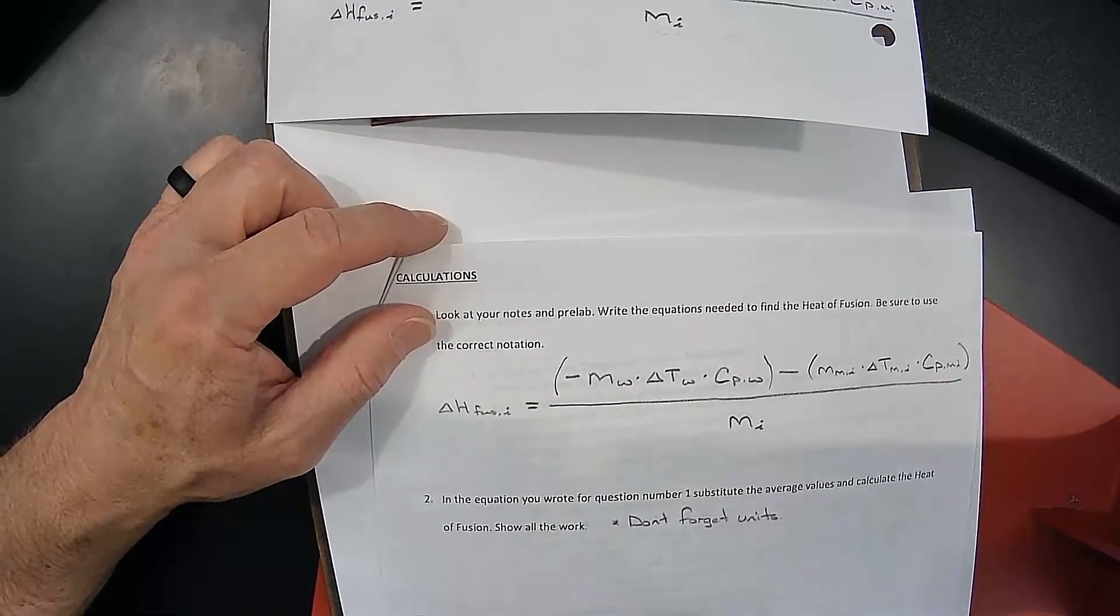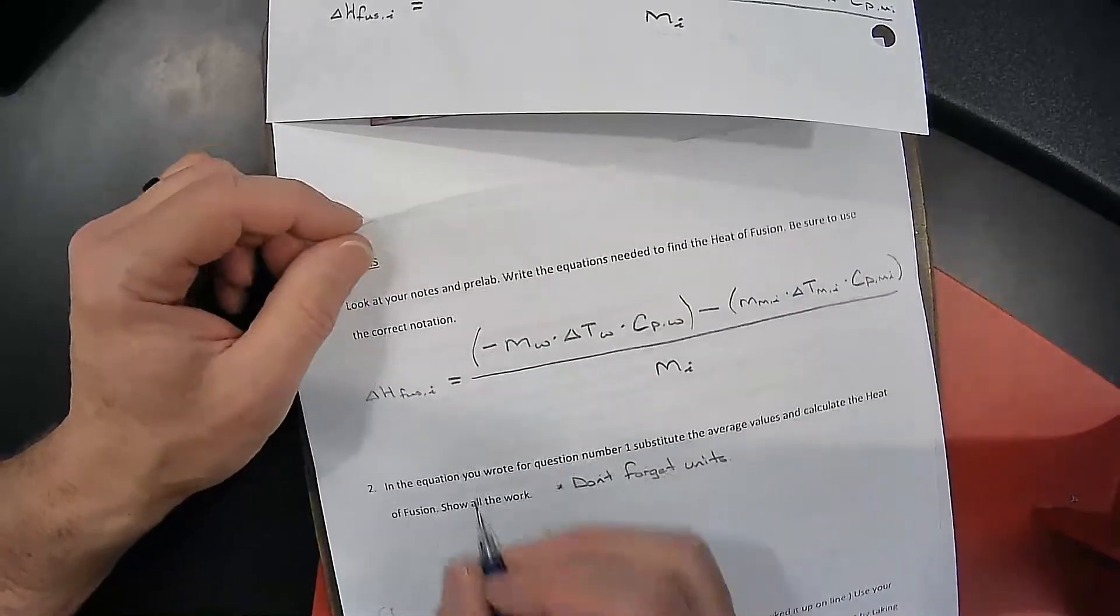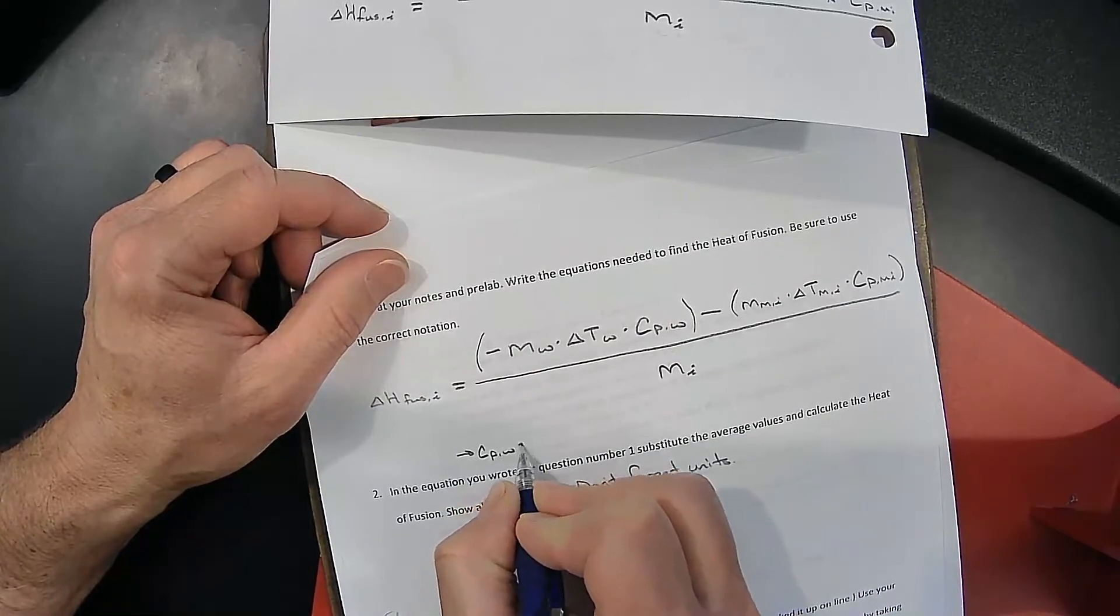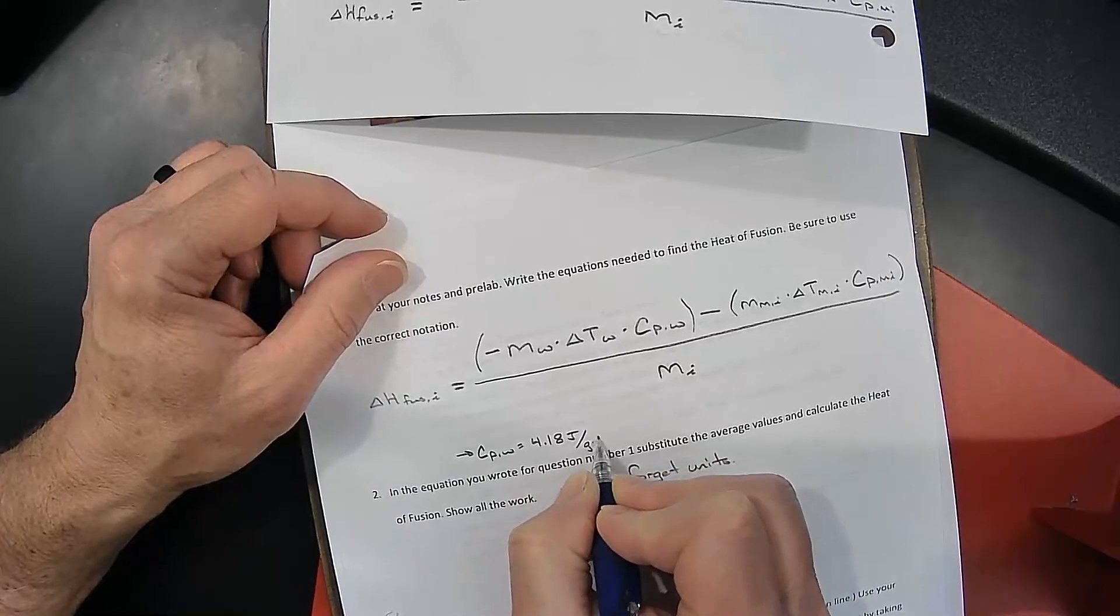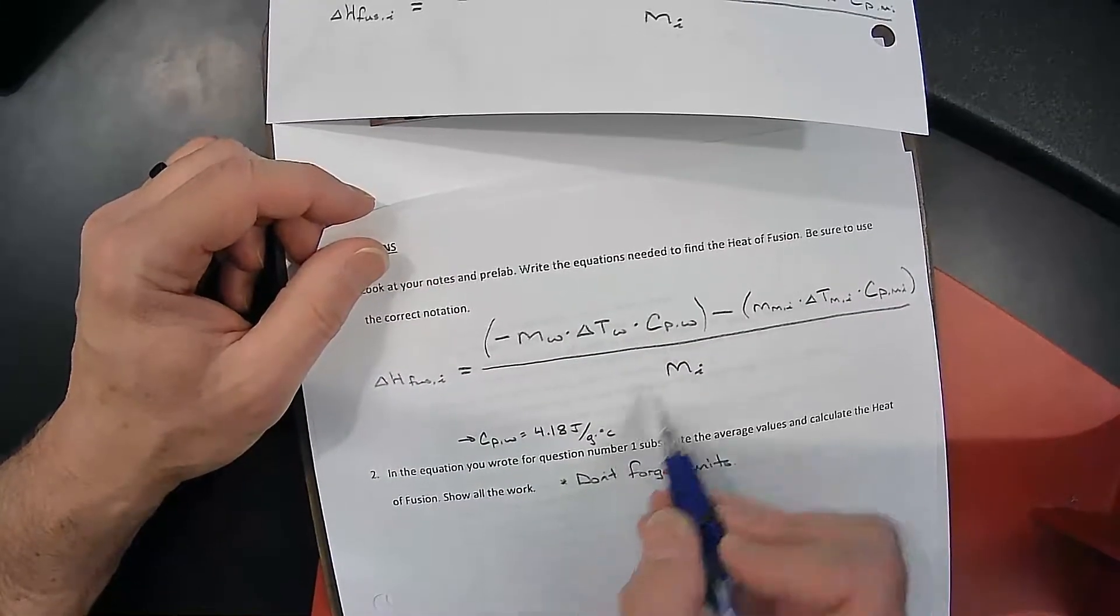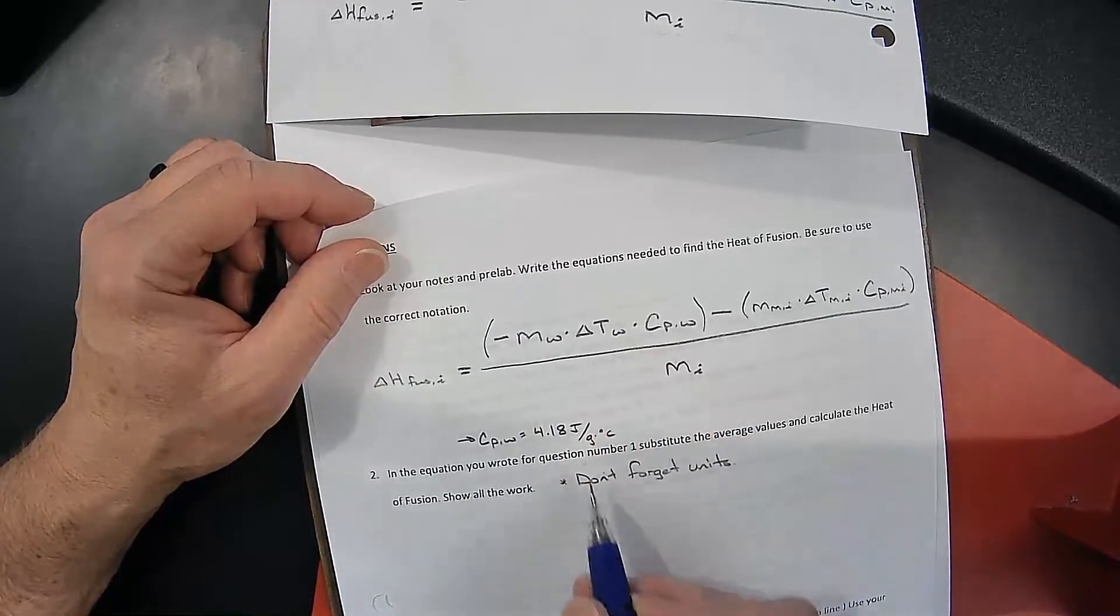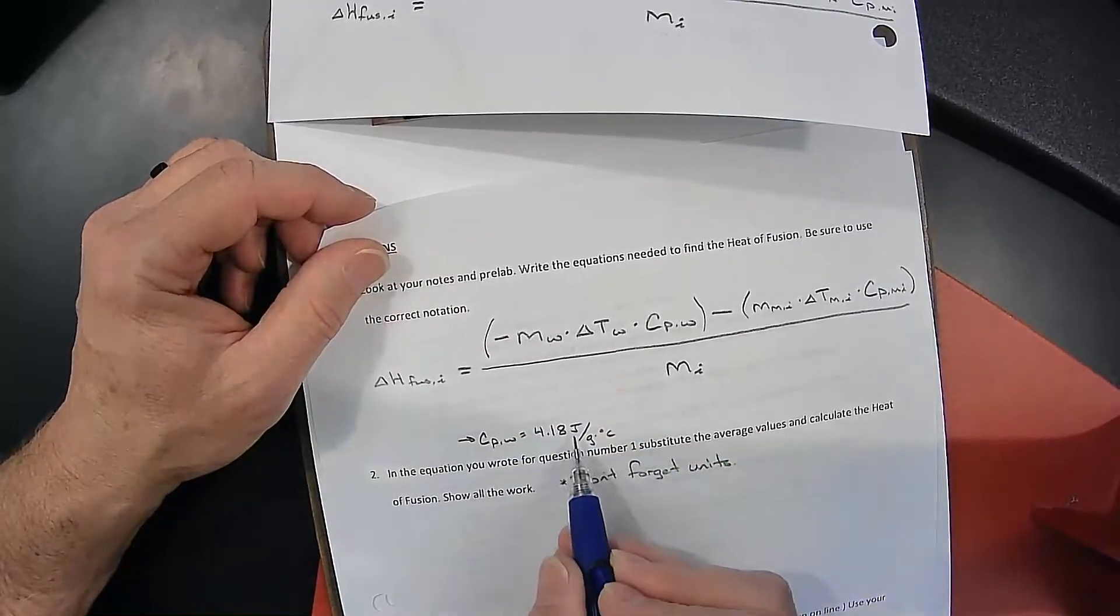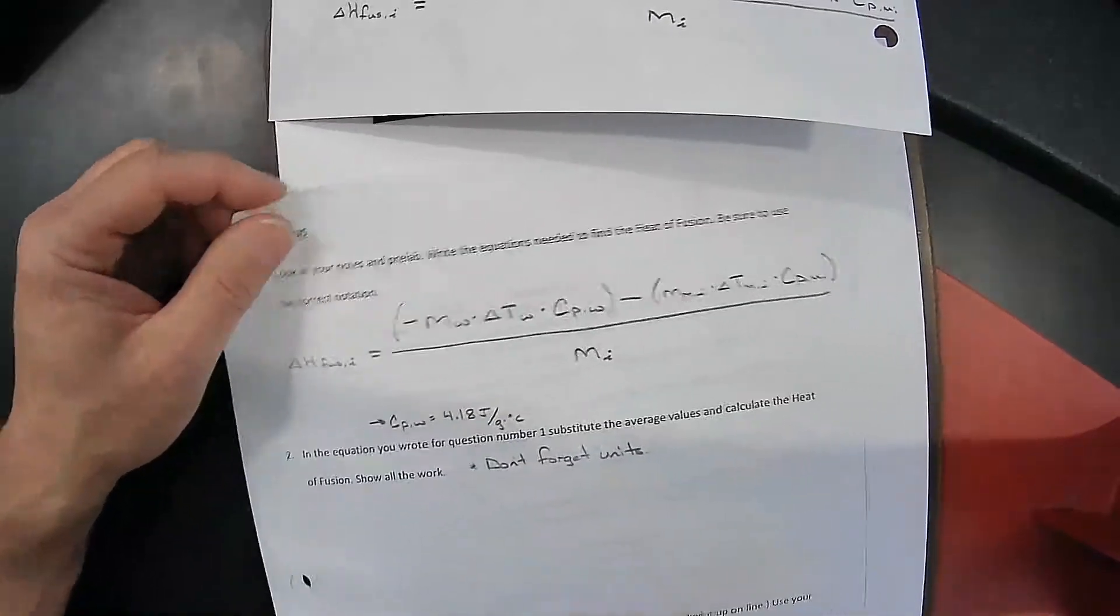The C_p of water is a value that we look up, and the C_p of water is 4.18 joules per gram degree Celsius. The degree Celsius on the bottom unit and the degree Celsius on the top unit will cross out. The grams on the bottom unit and the grams on the top unit will cross out, and you'll be just left with joules here.